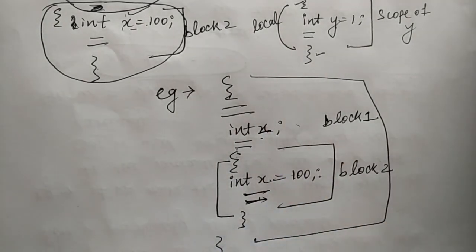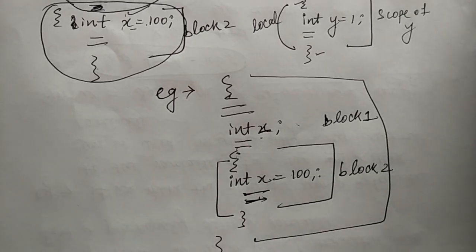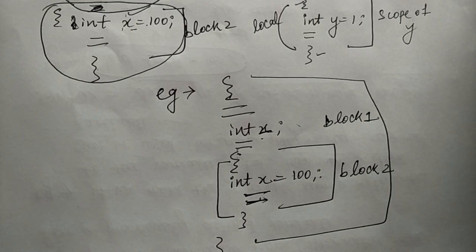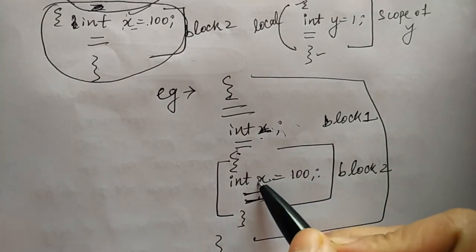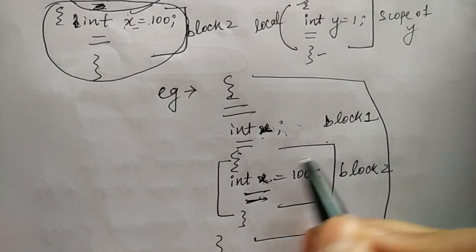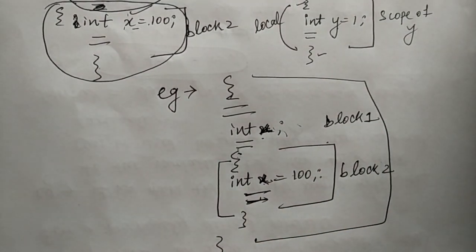Block 2 is contained inside block 1 — this is the nested block concept. A declaration in an inner block hides the declaration of the same variable in an outer block. Therefore, each declaration of x causes it to refer to a different data object. Every time you declare the same variable in a nested block, it will refer to a different memory location.